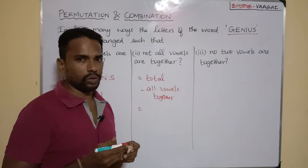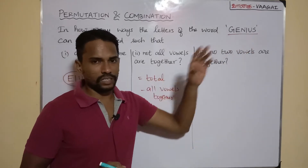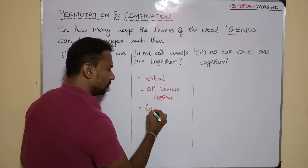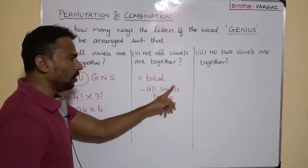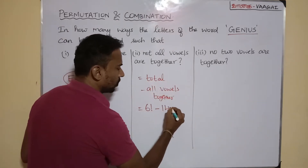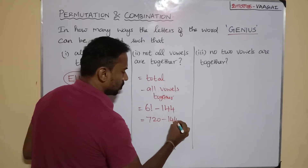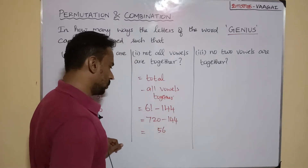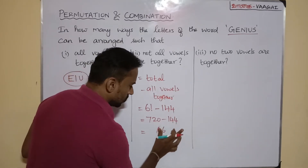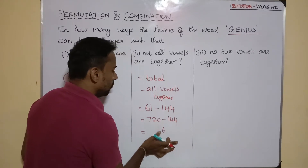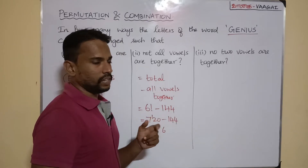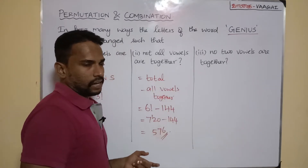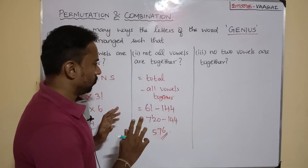The total number of ways to arrange the six letters of GENIUS without any restriction is 6! = 720. We already found that 'all vowels together' gives 144 arrangements. So the answer for the second question is 720 − 144 = 576.